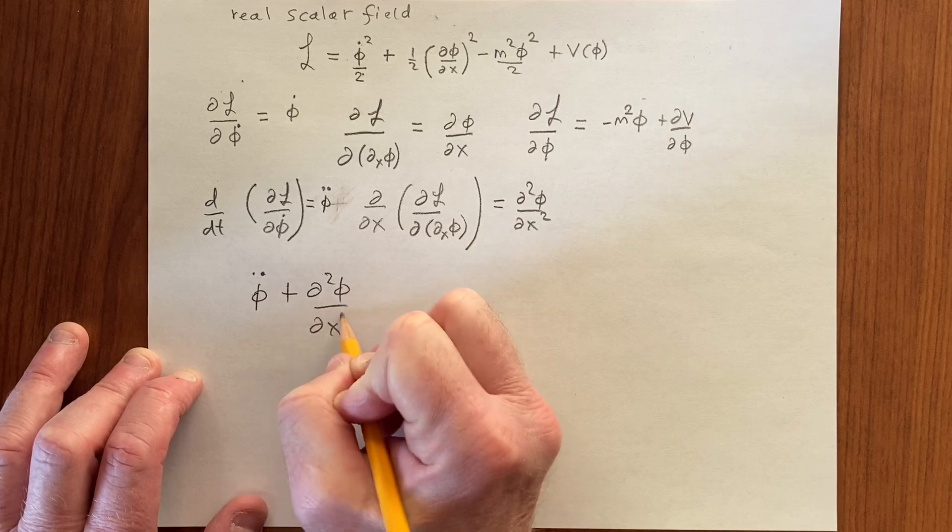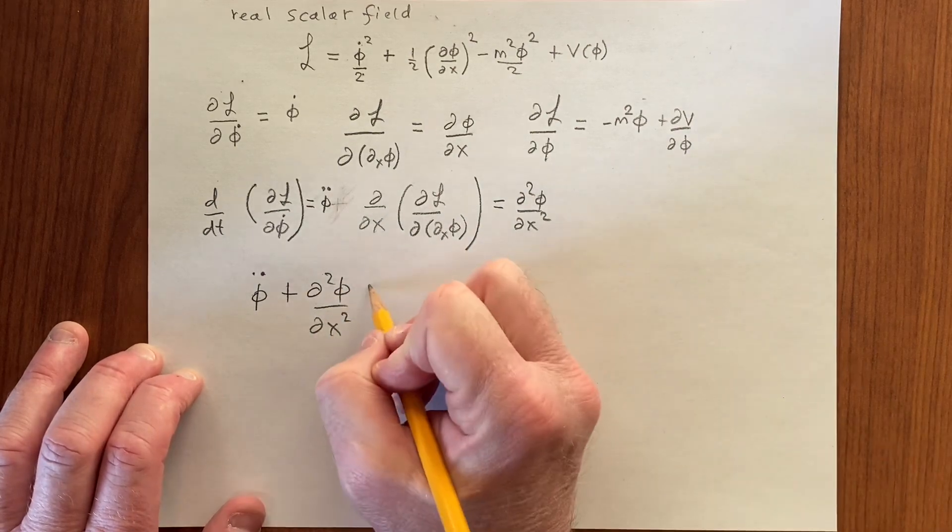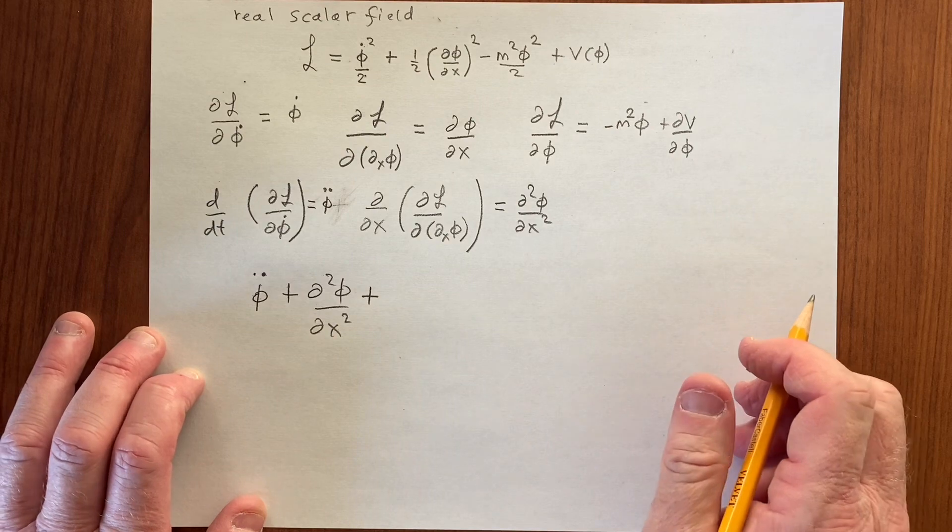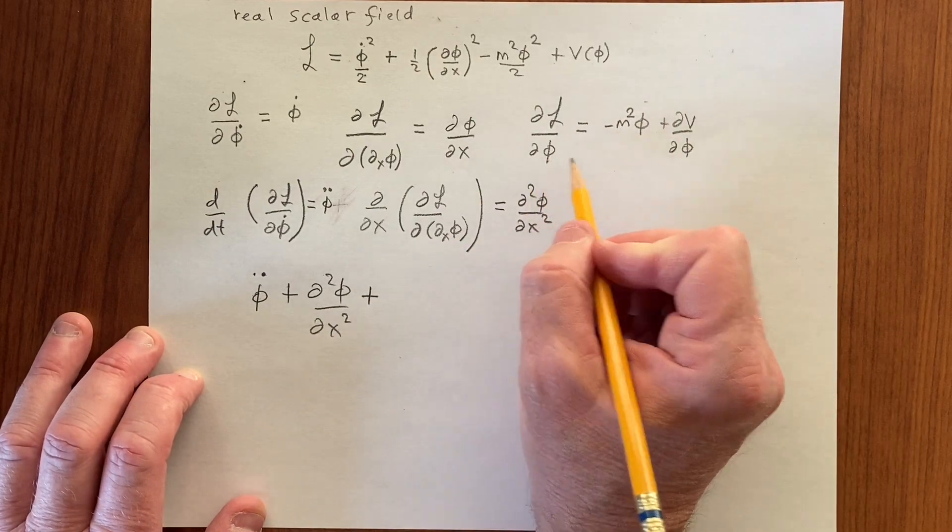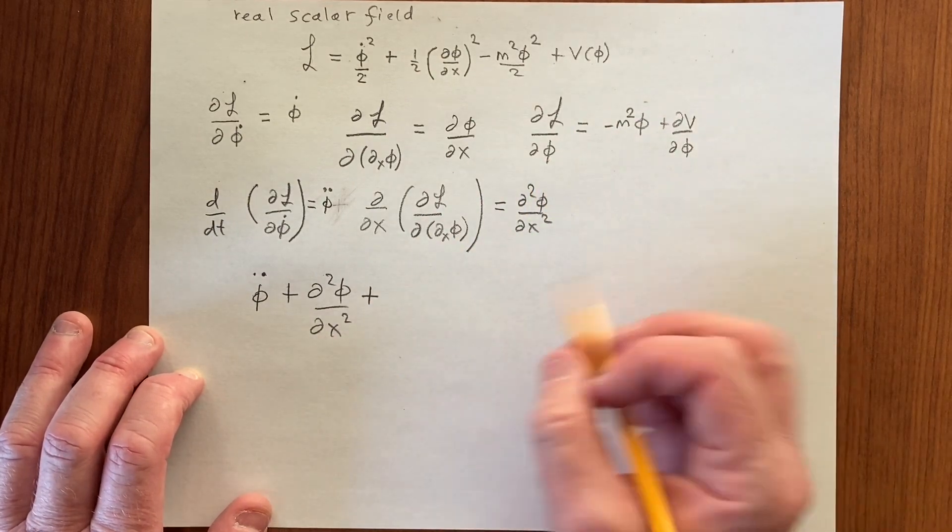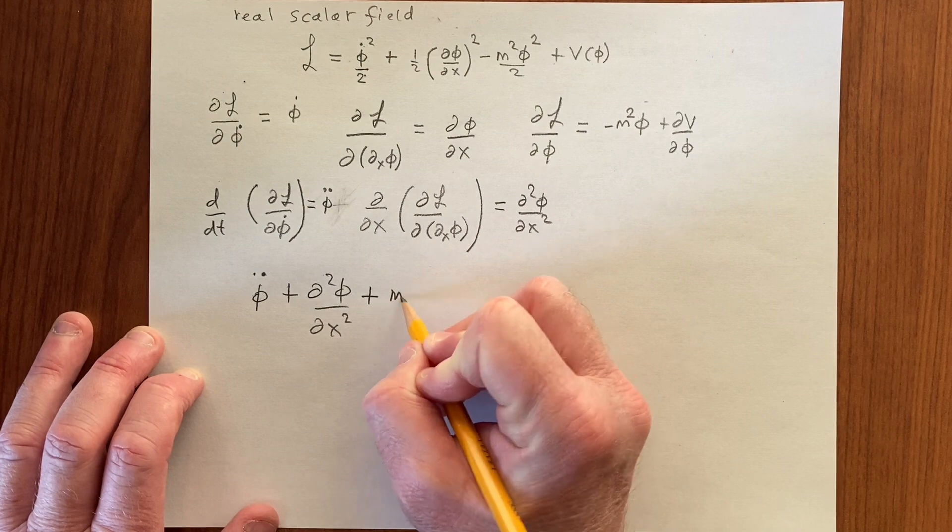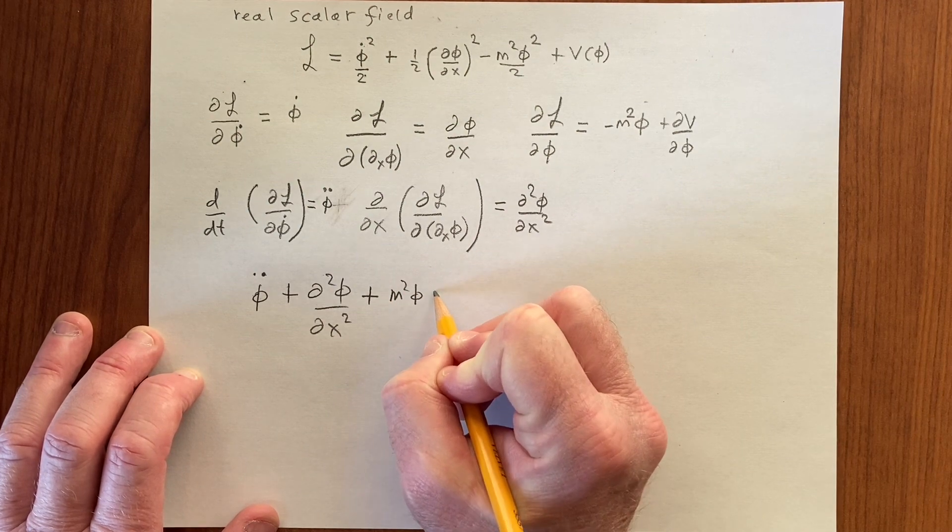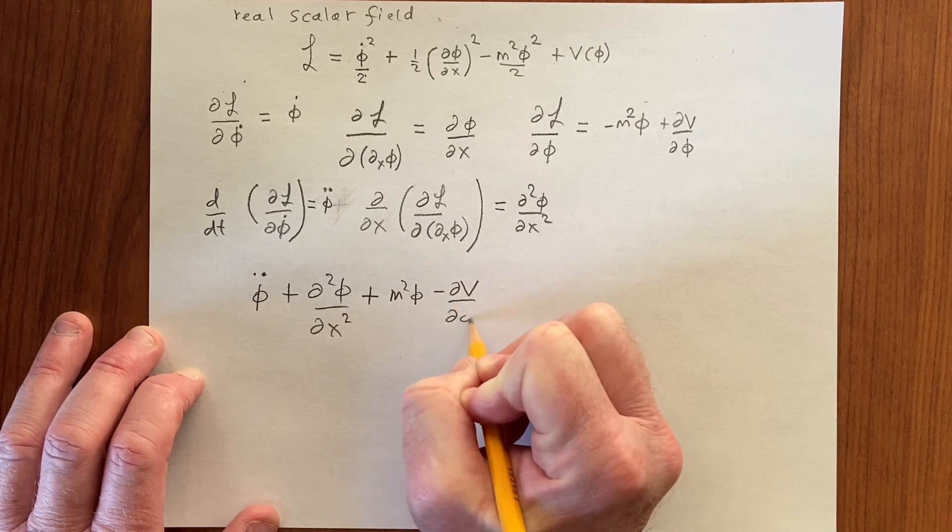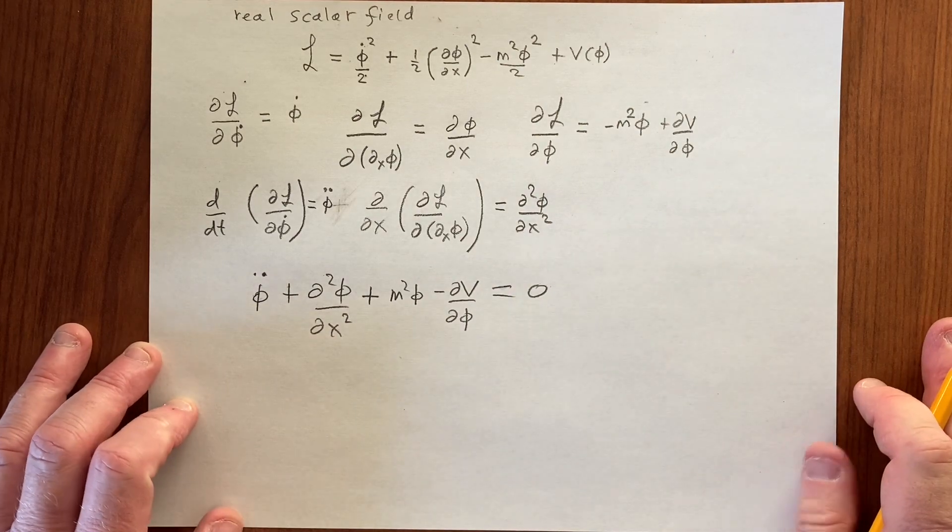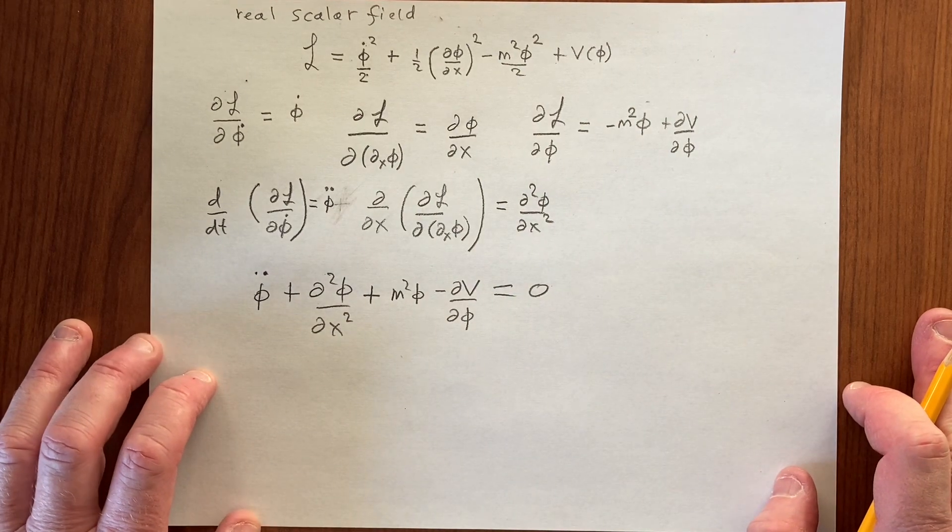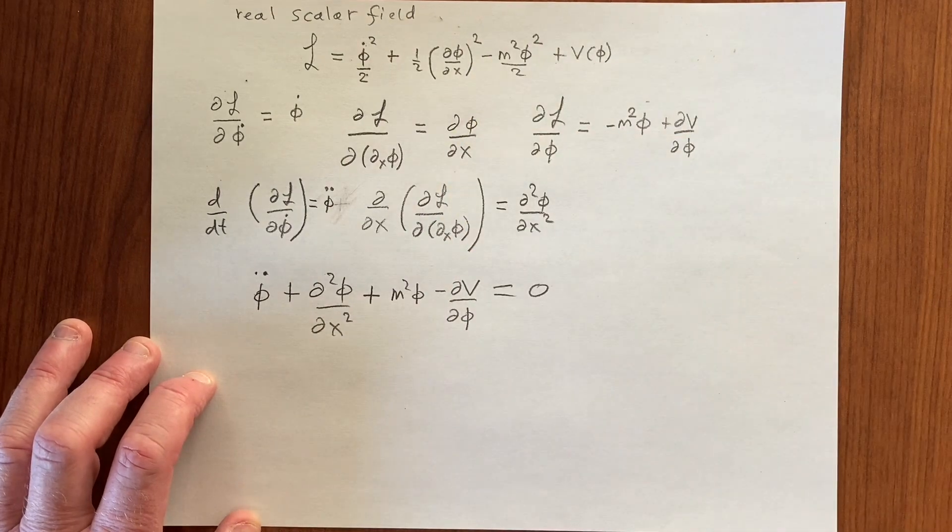We have minus dl by d phi, and that's equal to zero. So minus dl by d phi, that's m squared phi. Here we have minus dV by d phi, that's equal to zero. Those are the equations of motion from this Lagrangian.